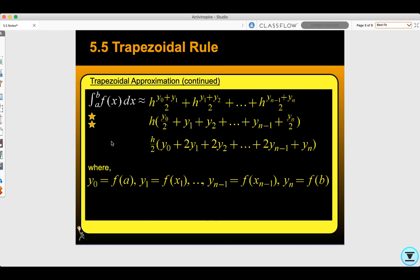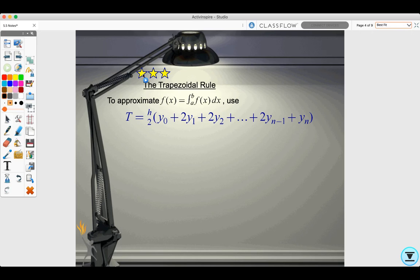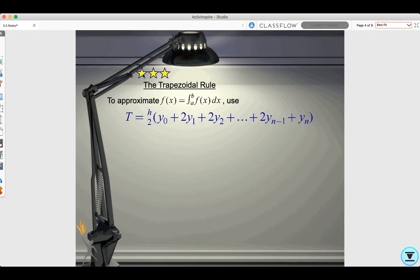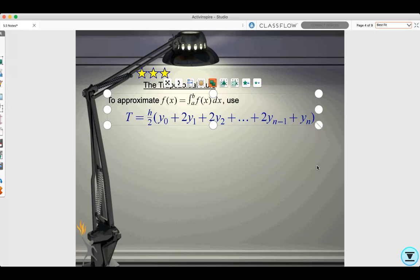You need to remember this only works with evenly spread subintervals. Without equal subinterval lengths you must use individual trapezoids. This formula only works for evenly spread out subintervals. If they are not of equal length you need to make sure that you use individual trapezoids.